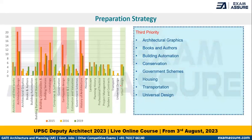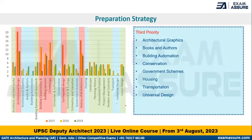In the third priority, we can have topics on which questions range between one to four in the exam: Architectural Graphics, Books and Authors, Building Automation, Conservation, Government Schemes, Housing, Transportation, and some questions related to Universal Design. Now, if I say we are prioritizing these, it does not mean that you only study the highest priority subjects — what it means is we focus more on them and not ignore the other subjects.